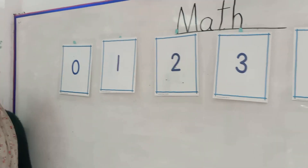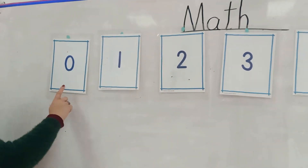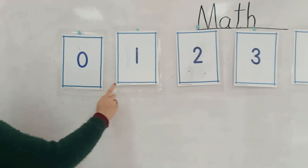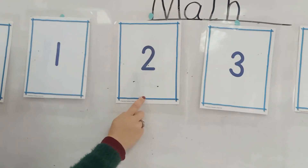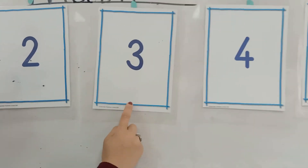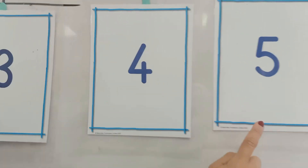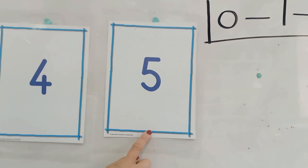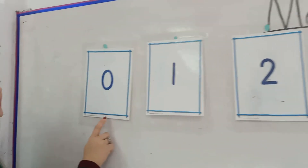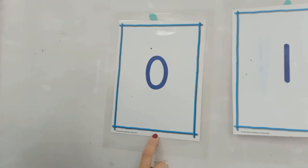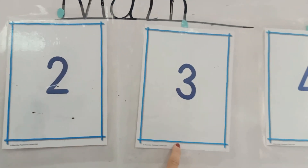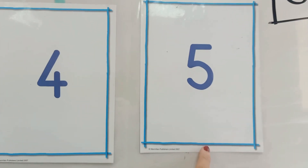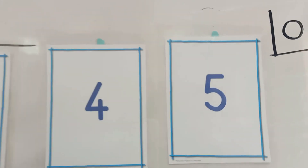Okay, let's count together. Zero, one, two, three, four, five. Again: zero, one, two, three, four, five.